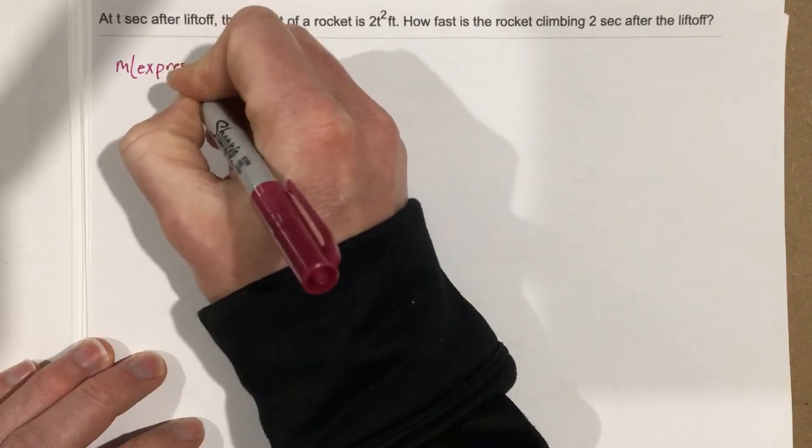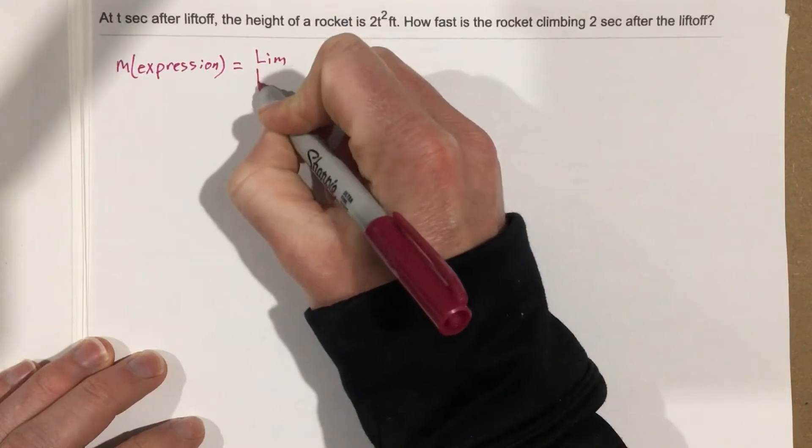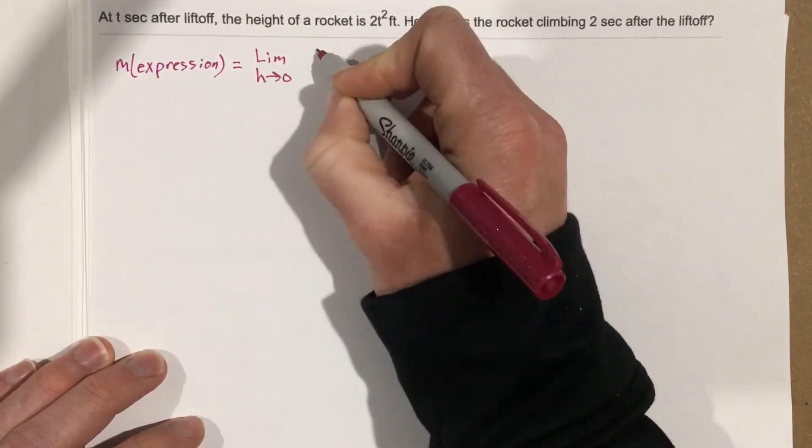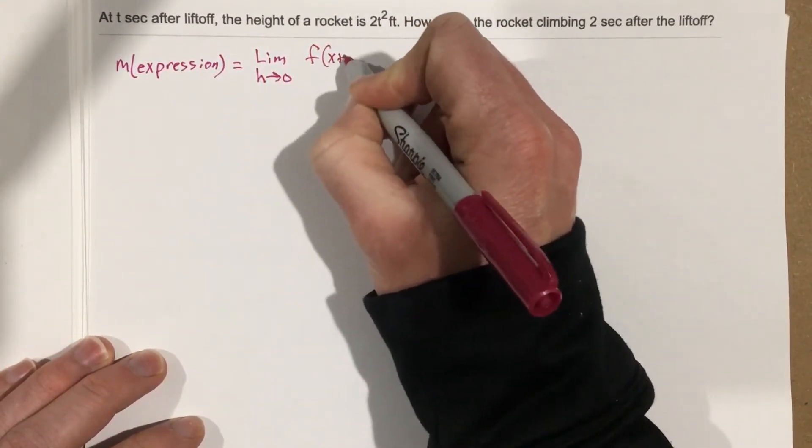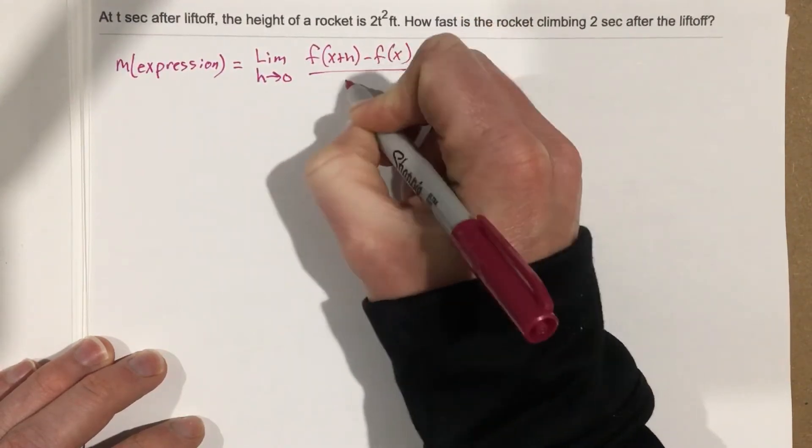To find the slope expression, we're going to say that limit as h approaches 0, f of x plus h minus f of x all over h.